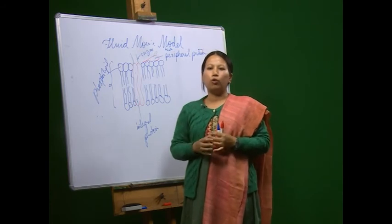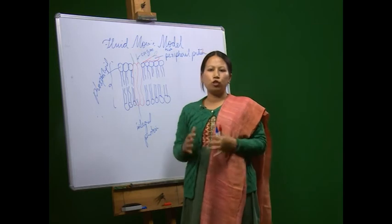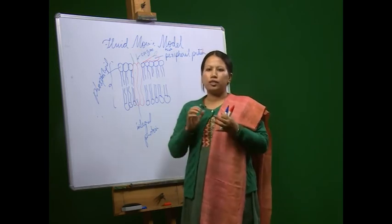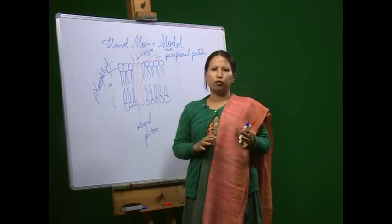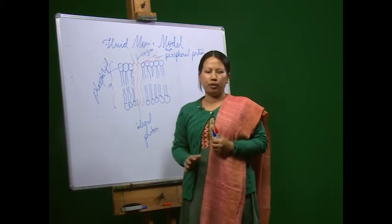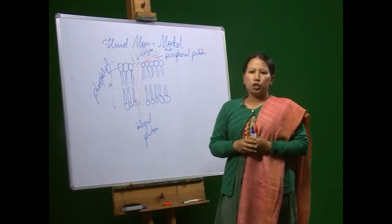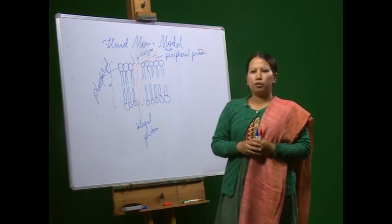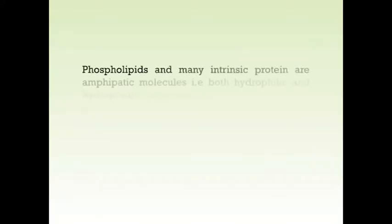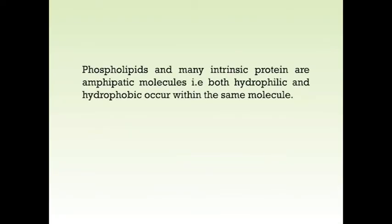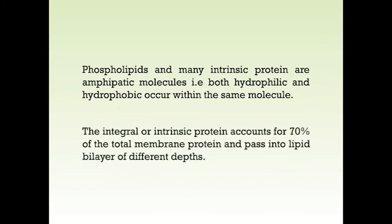To what extent a given globular protein penetrates into the lipid phase would be determined by the amino acid sequence of the protein and the location on its surface of the non-polar amino acid R groups. Thus, the various membrane proteins would form a mosaic-like structure in the otherwise fluid phospholipid bilayer. This mosaic is not fixed or static since the proteins are free to diffuse laterally in two dimensions, at least in some membranes. In their model, Singer and Nicholson consider the lipoprotein association to be hydrophobic, and the fluidity of the membrane results from hydrophobic interaction.